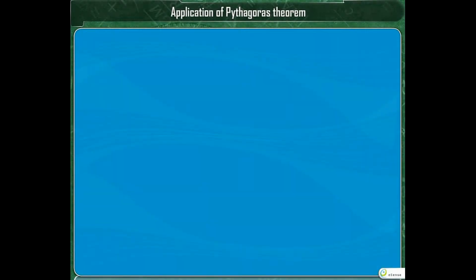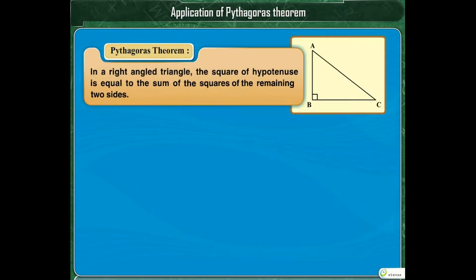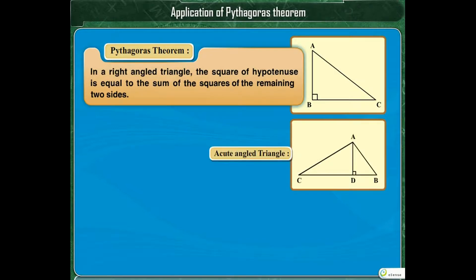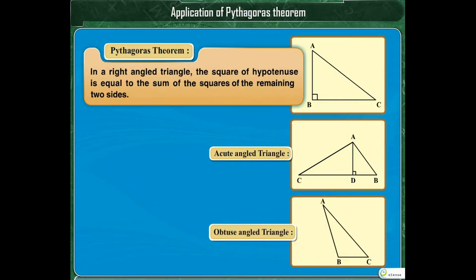Application of Pythagoras Theorem. Pythagoras Theorem gives us the relation between the perpendicular sides and the hypotenuse of a right-angled triangle. Can we make use of this theorem to establish some relation in the sides of an acute-angled triangle or an obtuse-angled triangle? Let us discuss the results we get when we use the Pythagoras Theorem for them.